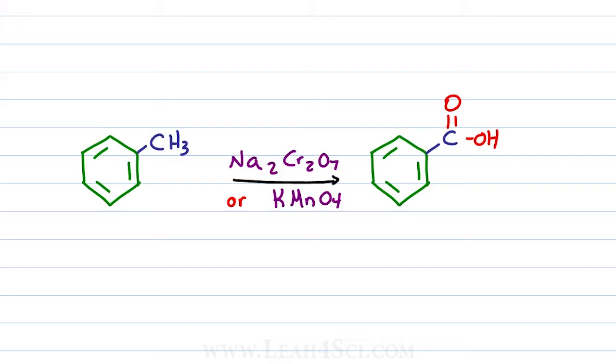When you react a substituted benzene like toluene with a strong oxidizing agent like chromic acid, sodium dichromate or potassium permanganate, the product is a carboxylic acid.